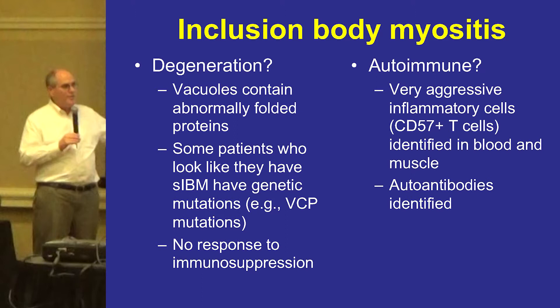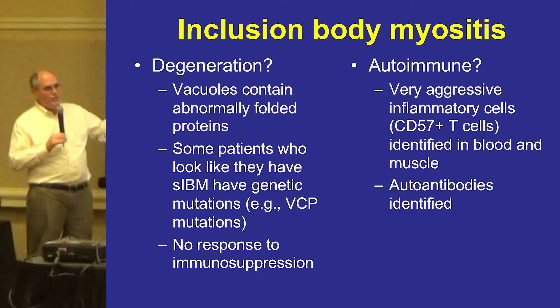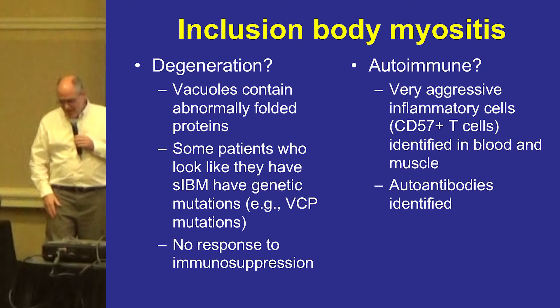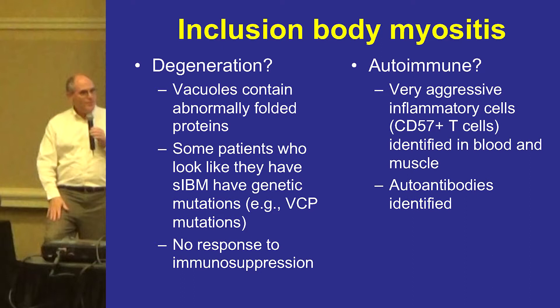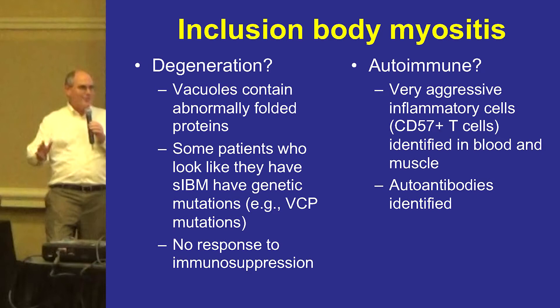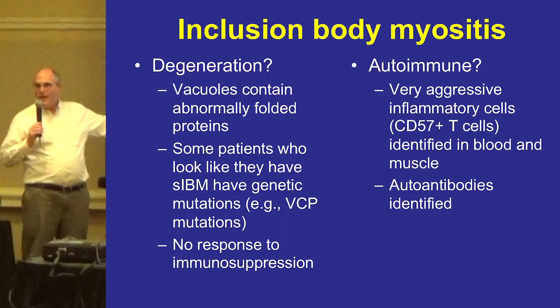There's a disease with rimmed vacuoles called hereditary inclusion body myopathy due to a defect in the GNE gene, with trials currently underway. It's very different from inclusion body myositis — for example, patients misdiagnosed with IBM because of rimmed vacuoles on biopsy, instead of having weak quadriceps with spared hamstrings like IBM, have the reverse: hamstrings totally gone, quadriceps looking perfect.